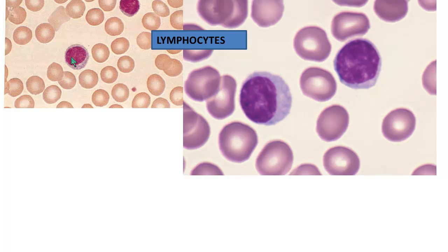Lymphocytes are the smallest of the white blood cells and also the least numerous. They are also known as T cells and B cells, and they're important for antibody production and mediating an immune response. To identify these cells on the slide, look for smaller cells — they're almost close to the size of a red blood cell. They have a large, round or oval nucleus with pale cytoplasm visible around the edge. That large, round, smooth nucleus is characteristic of lymphocytes.